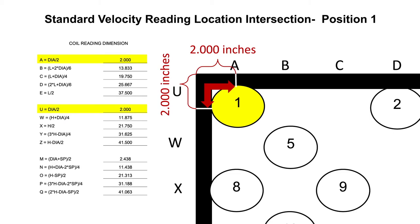Since position 1 is on the left of the center, the measurement and marking for A is 2 inches from the left inside coil toward the center horizontally, and for U, 2 inches from the top inside coil towards the bottom. Therefore, the position 1 standard velocity reading location for the center of the rotating vane anemometer is at the intersection of A, 2 inches from the left to center, and U, 2 inches from the top to bottom.